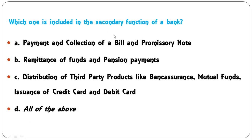Which one is included in the secondary function of a bank? Options: payment and collection of a bill and promissory note; remittance of funds and pension payments, distribution of third-party products like bank insurance and mutual funds; issuance of credit card and debit card; or all of the above? All three — A, B, and C — are part of the secondary function as per the syllabus. All of the above is the correct answer.